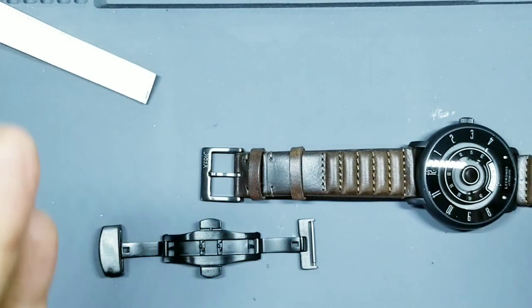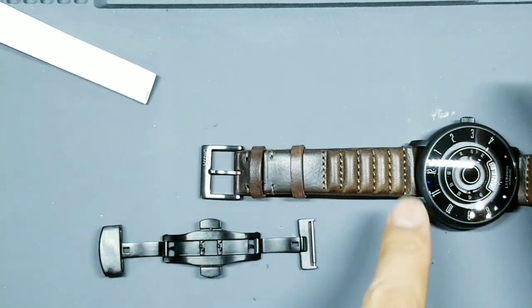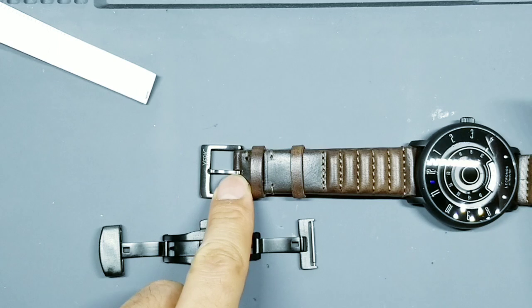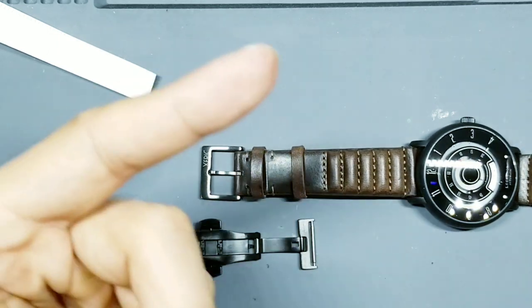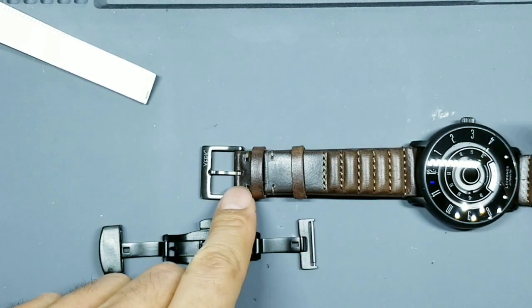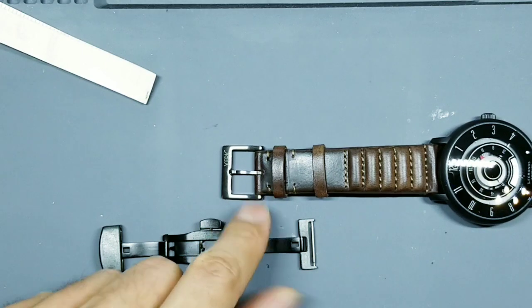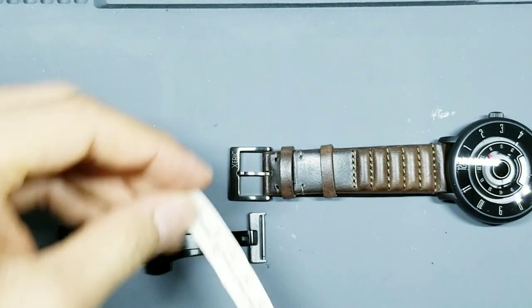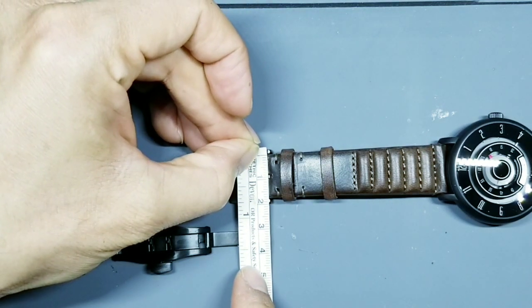The width of that needs to match the width of this. Now, normally the rule of thumb is whatever your lug width is or your bandwidth, you minus two millimeters from that to get the width of this. So this is a 20 millimeter band or lug on the watch, which means minus two should make this an 18 millimeter spring bar that goes to the end here. So if I measure this out, the end of that watch strap, indeed, you can see that that's 18 millimeters.